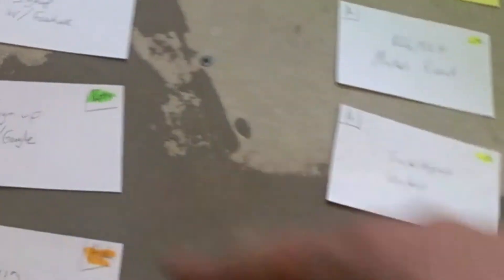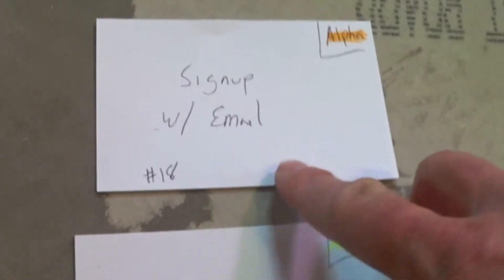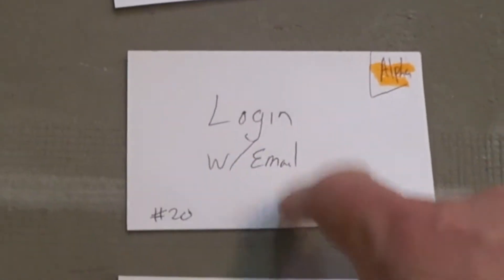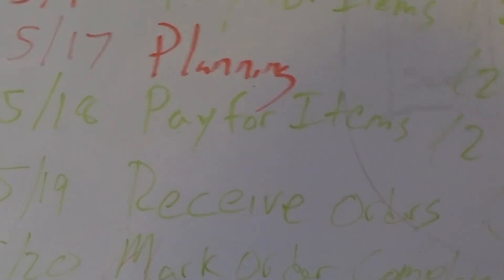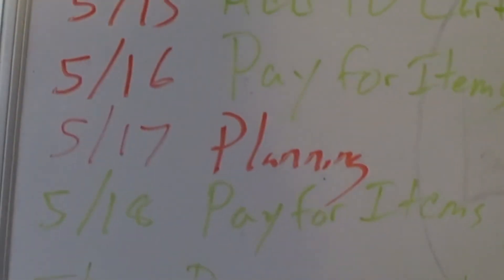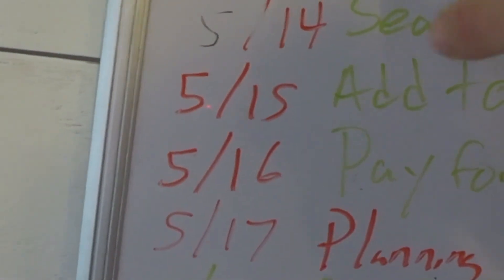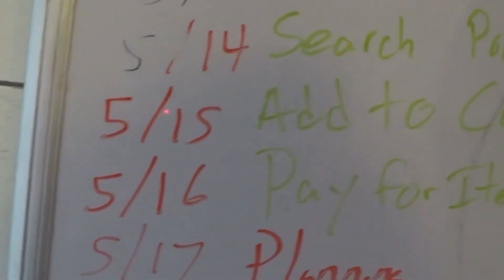I put episode numbers on each of these cards to try to come up with an estimate of the amount of time. We've done episode 18, and the next thing I want to do is log in with email. Over here on this board, these colors are meaningless — my markers kept running out of ink. We'll do the login with email tomorrow.